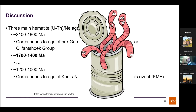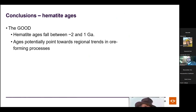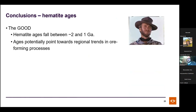Initial concerns that the low reset temperature of hematite would prevent any survival of old ages proved unfounded — quite a bit survived. Conclusions of the hematite age study: ages fall between 2 and 1 billion years, linked to known regional geological events — the pre-Hamahara unconformity and the Kaisna-Namaqua orogeny.